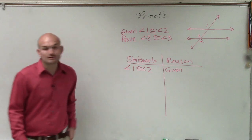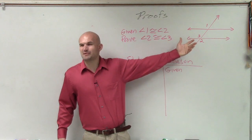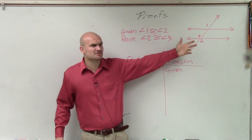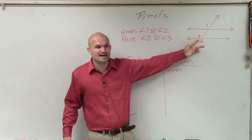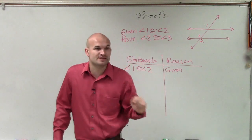So we have angle one is equal to angle two. Now, here's the good question. Does anybody remember how do angle two and angle three relate to each other? Angle two and angle three don't rely on having parallel lines. But they rely on having an intersection of two lines, which are?